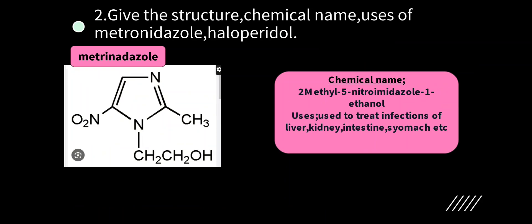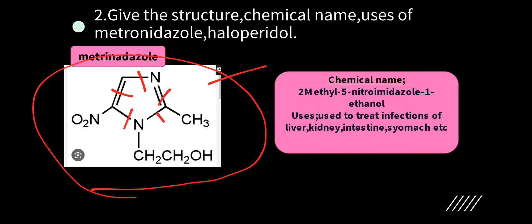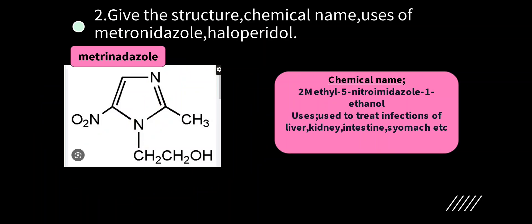Next question: give the structural chemical name and uses of metronidazole and haloperidol. For metronidazole, you have to practice the structure — a five-membered ring with two nitrogen atoms, with substituents CH3, NO2, CH2, CH2, OH. Chemical name: 2-methyl-5-nitroimidazole-1-ethanol. It is used to treat infections of the liver, kidney, intestine, and stomach.